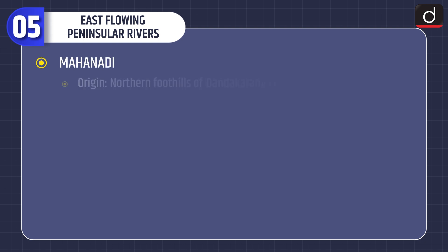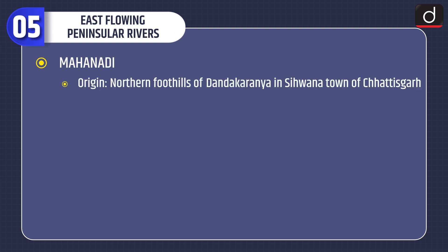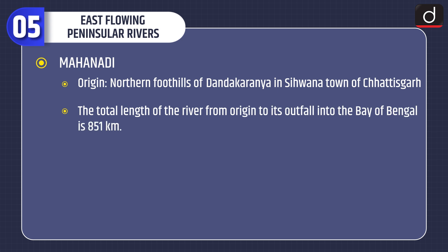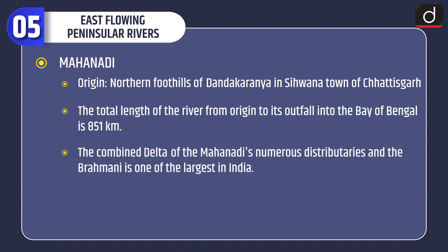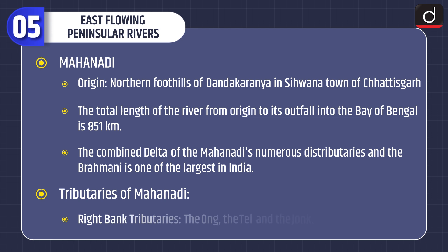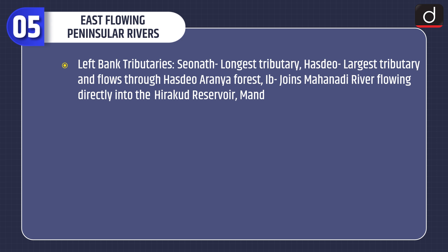Now let's discuss east flowing Peninsular Rivers. First is Mahanadi. Origin: Northern foothills of Dandakaranya in Sihawa town of Chhattisgarh. The total length from origin to its outfall into the Bay of Bengal is 851 km. The combined delta of Mahanadi's numerous distributaries and the Brahmani is one of the largest in India. Right bank tributaries: Ong, Tel and Jong. Left bank tributaries: Seonath, the longest tributary; Hasdeo, the largest tributary, which flows through Hasdeo Aranya Forest; and Ib, which joins the Mahanadi flowing directly into the Hirakud Reservoir.